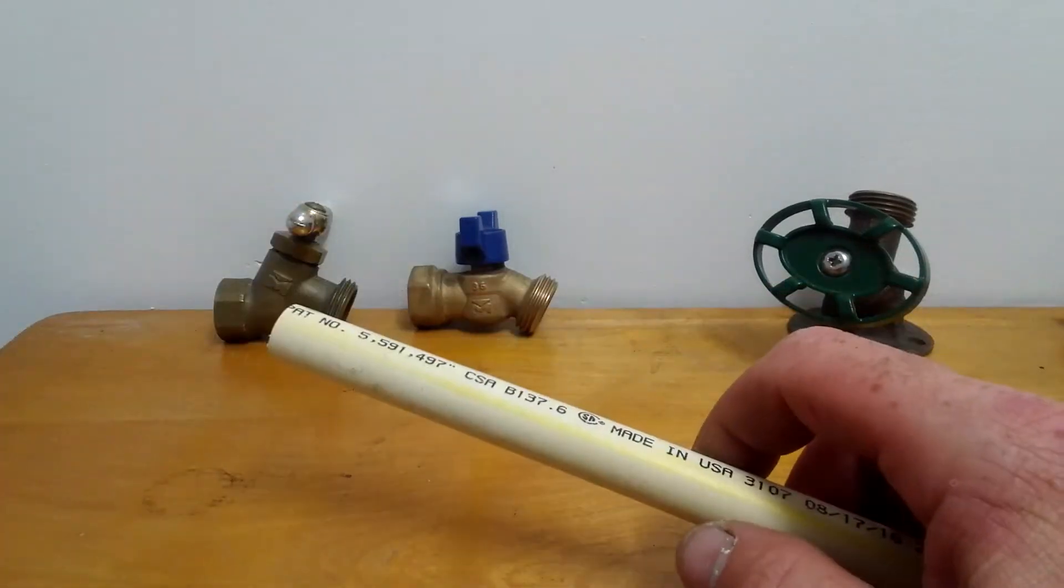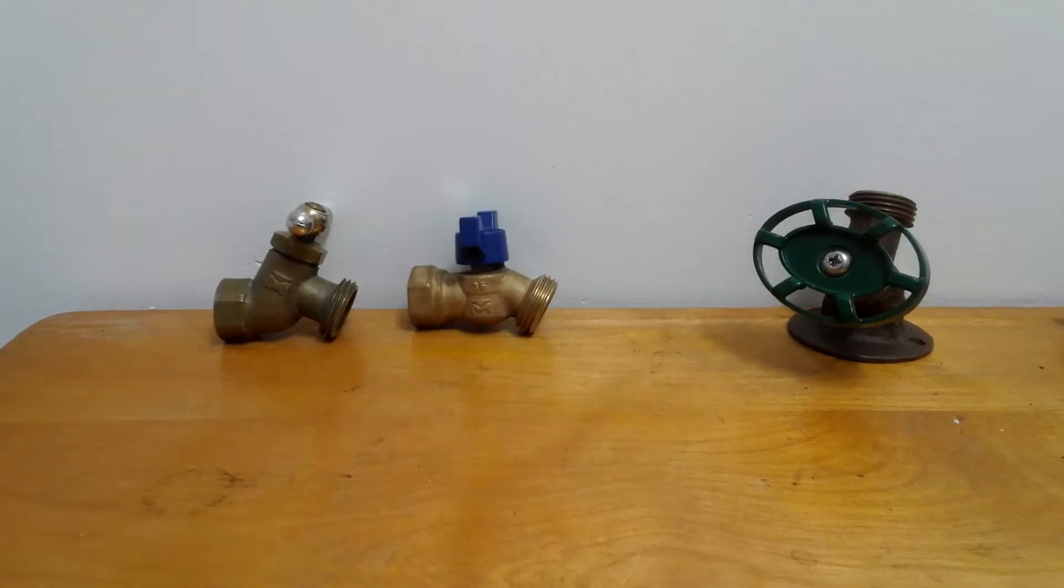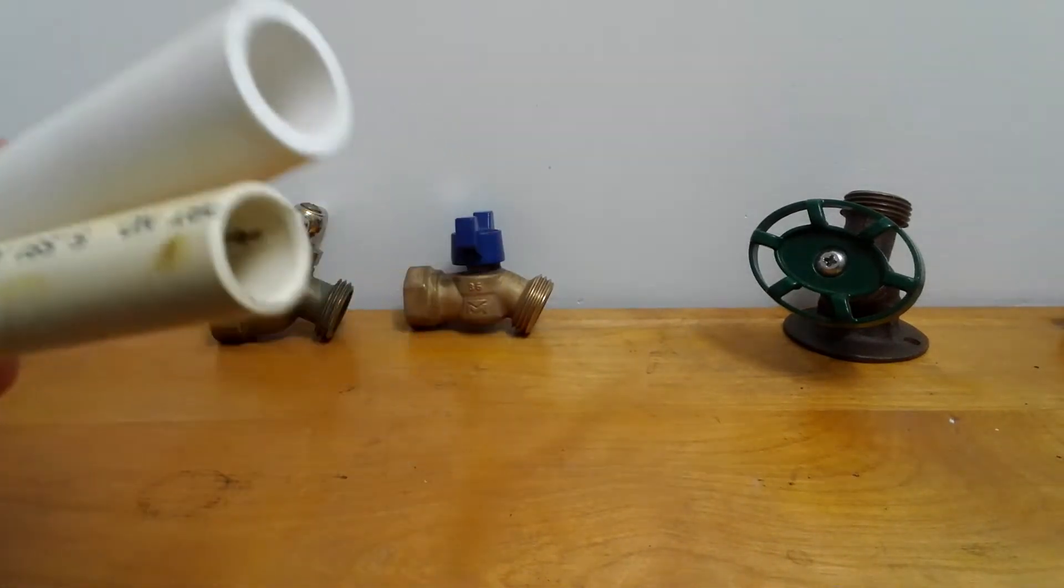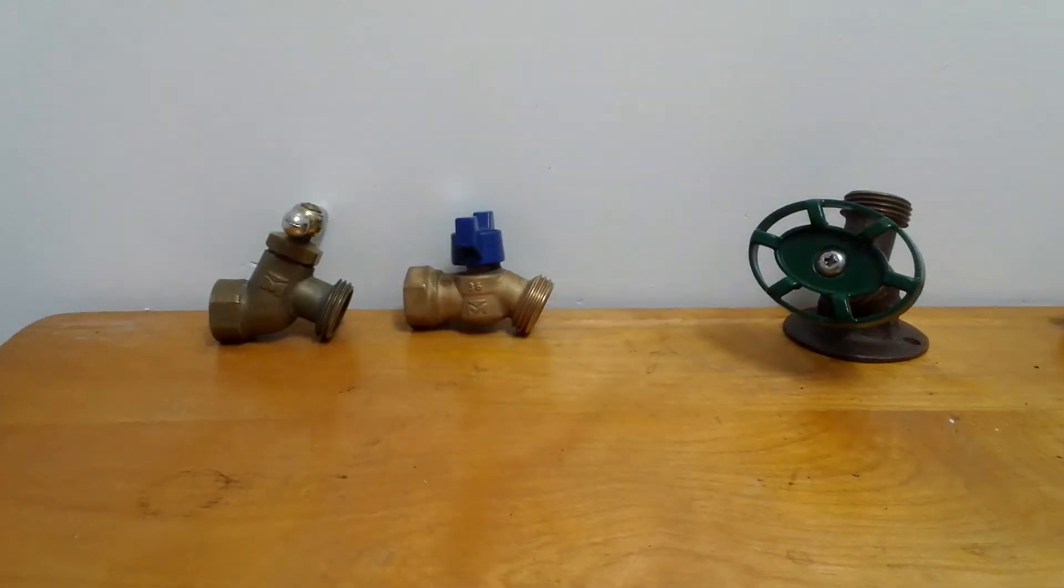Now the difference between PVC and CPVC is this CPVC is the same size as pex and copper. It's copper tube size outside diameter so it's 5/8 outside diameter but it's called half inch.